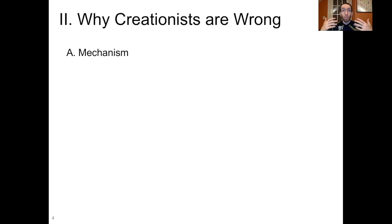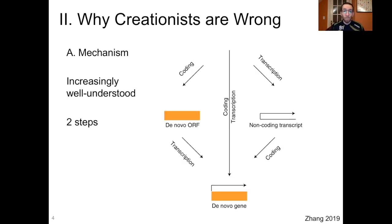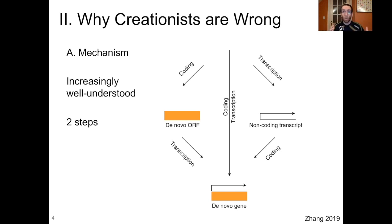So why are the creationists wrong about orphan genes? First we can talk about the mechanism of generating a new gene in a specific lineage. This mechanism has become increasingly well understood over the last decade or two, and basically it involves two steps. You have a region of DNA that's not a gene, it's not being translated ultimately into an amino acid sequence, and it needs to acquire two things: the ability to be transcribed, and the ability to become translated. You could have those in either order. This schematic of the process is from Zhang 2019, which along with the other sources is linked below. So you could acquire transcription and then become protein coding, or you could become amino acid encoding and then later gain transcriptional activity.